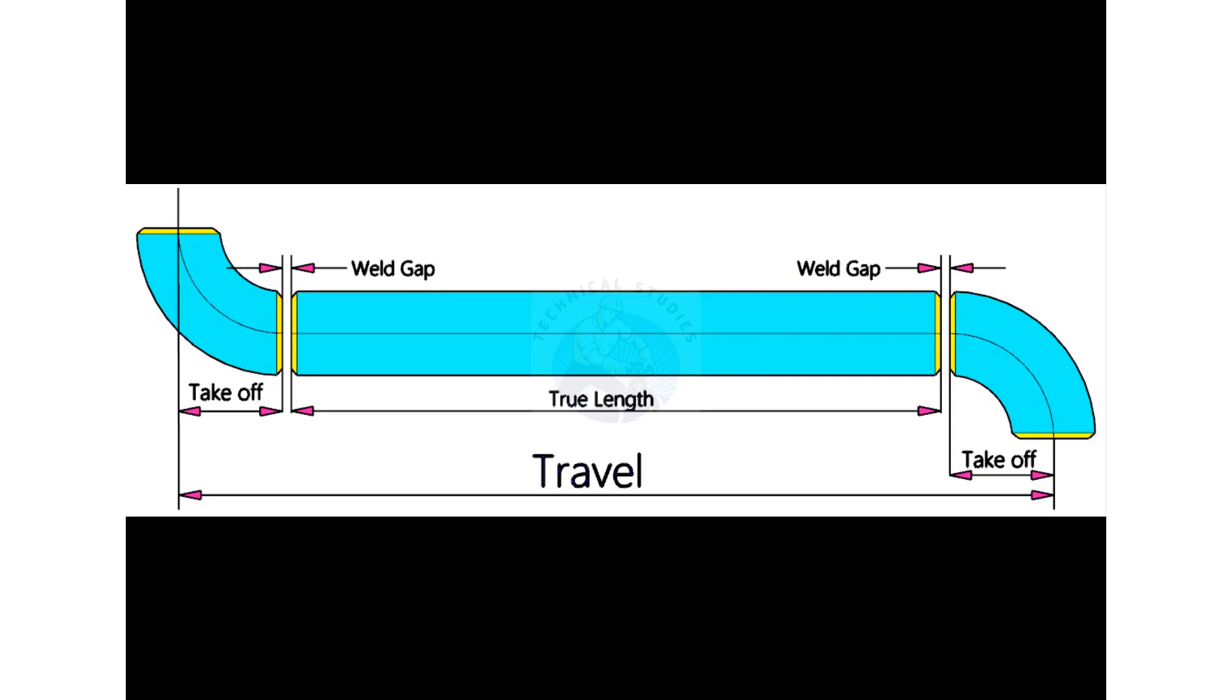How will we calculate the true length of the spool? The true length or cut length is: add two welding gaps and two take offs, then minus this sum from the travel.